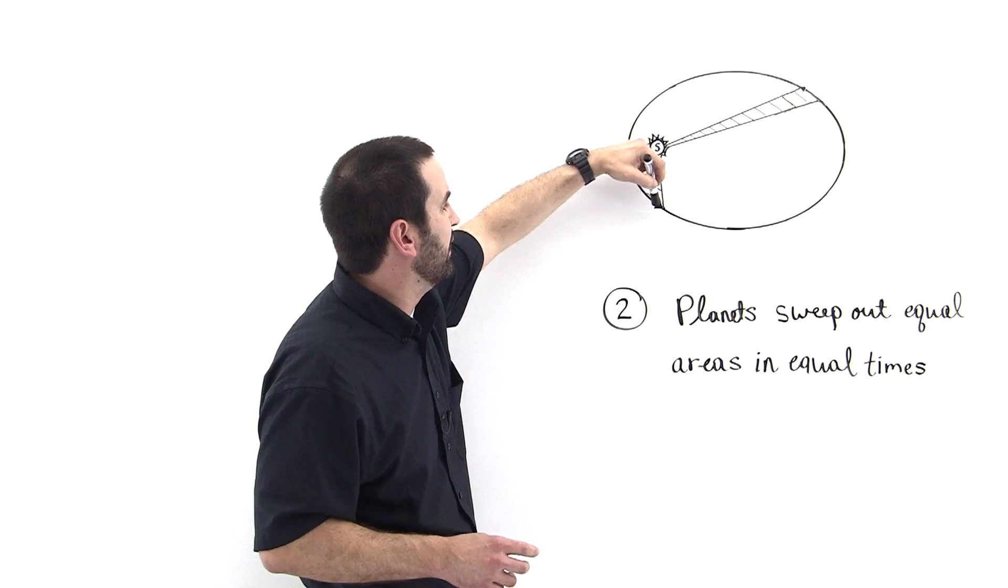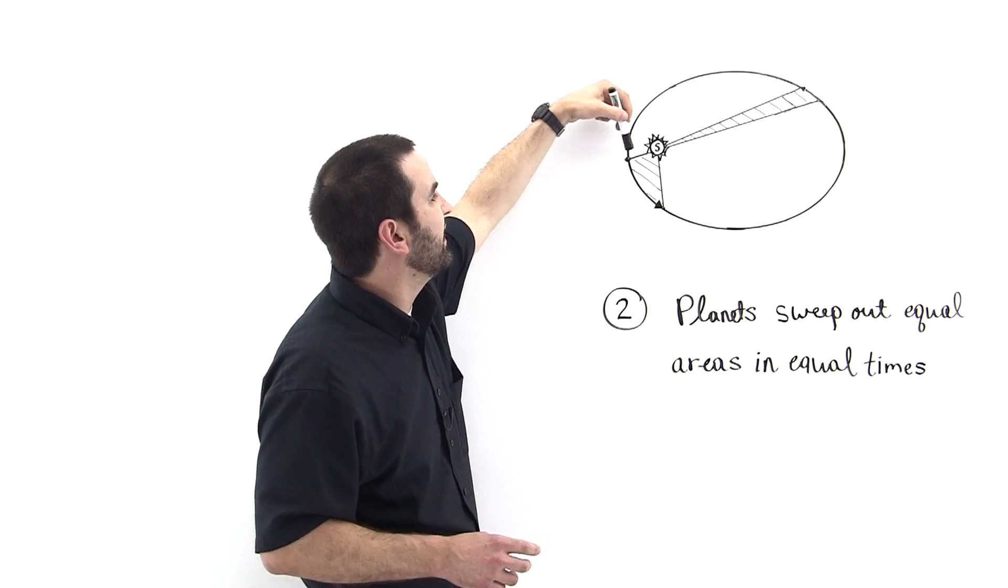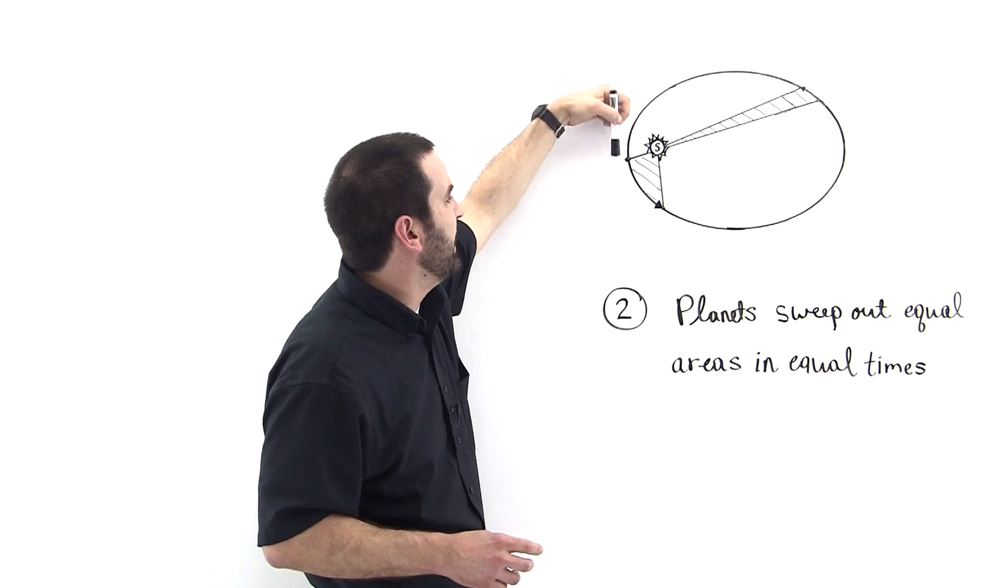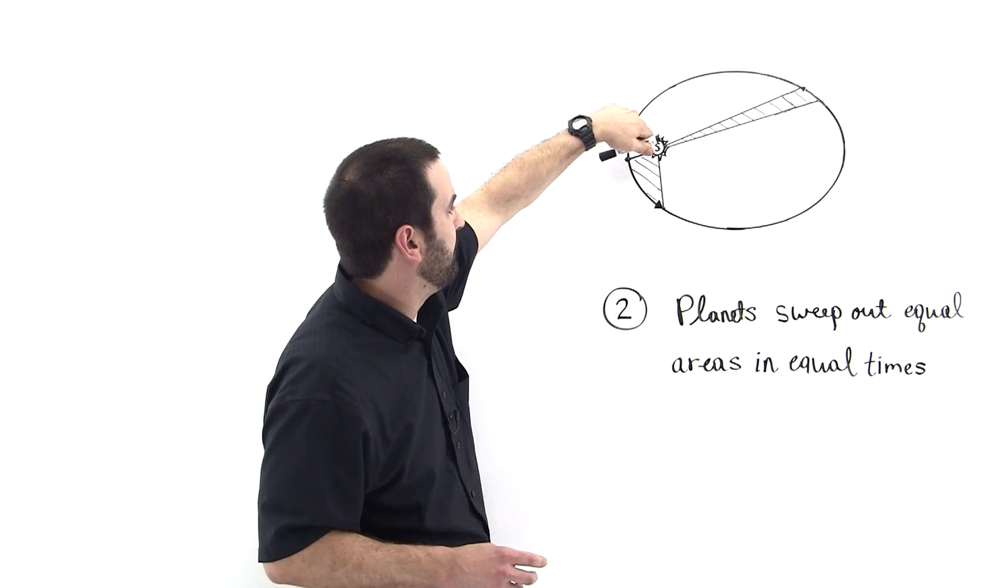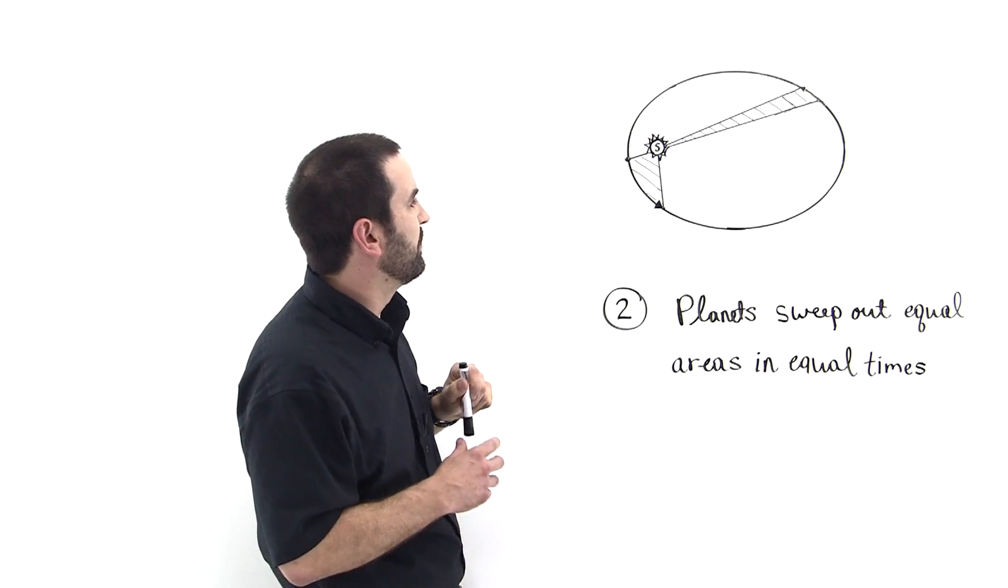it's going to cover some arc length, and so a line connecting from the sun to the planet is going to sweep out a big area.